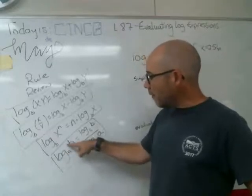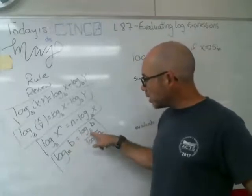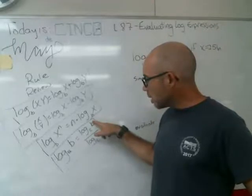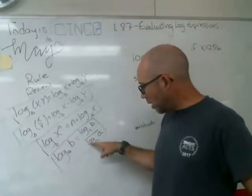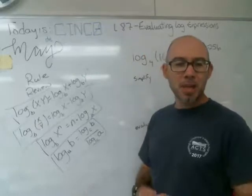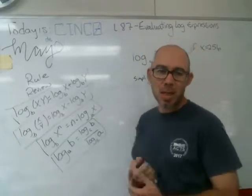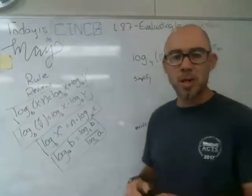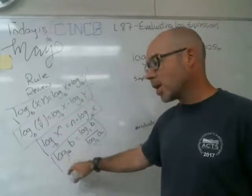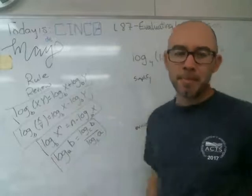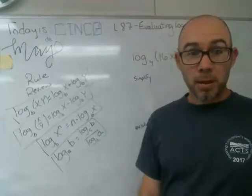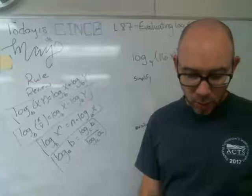And then this is the change of base. Log base A of B could be rewritten to a different base. Take the logarithm of B divided by the logarithm of A. That one comes in handy when you want to change it to base 10 or to base E in order to simplify the problem. We can take something where we don't like the way it is, we can split it up and go from there.